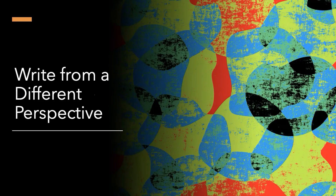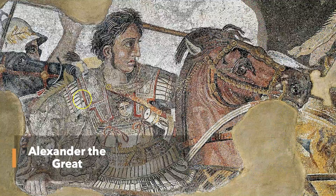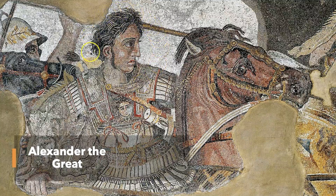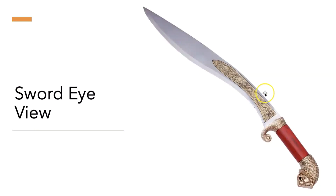We're going to look at a short story about Alexander the Great, possibly the most famous conqueror in history. If you hadn't heard of him, you're about to find out a lot. The interesting perspective you might think would be to write a story from Alexander the Great's point of view — but no, we're going for an even more interesting perspective, which is to write from his sword's point of view.